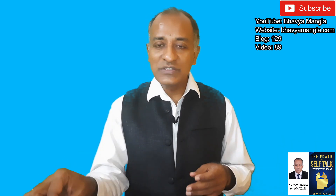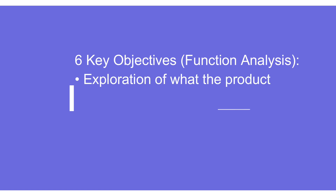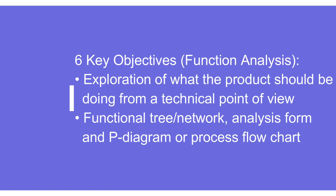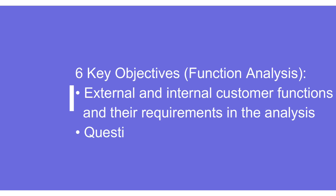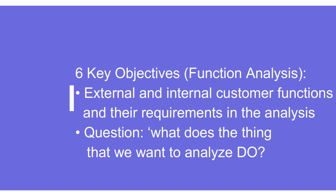Going deeper into function analysis, there are six key objectives. The first is about what the product should be doing from a technical perspective — we should not write anything generic but only the technical aspects. We take support from a P-diagram (parameter diagram) or the process flowchart, depending on whether it is design FMEA or process FMEA. Taking inputs from structure analysis, step two, we can understand the function and its requirements more easily.